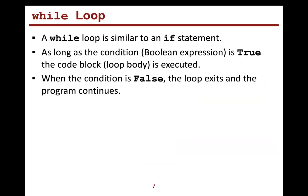A while loop is similar to an if statement — branching — where you have some kind of condition and you're asking, is something true or false? A while loop says: as long as that condition, that Boolean expression, is true, the code block or loop body is executed. And once that condition is false, the loop exits and the program continues after the loop.